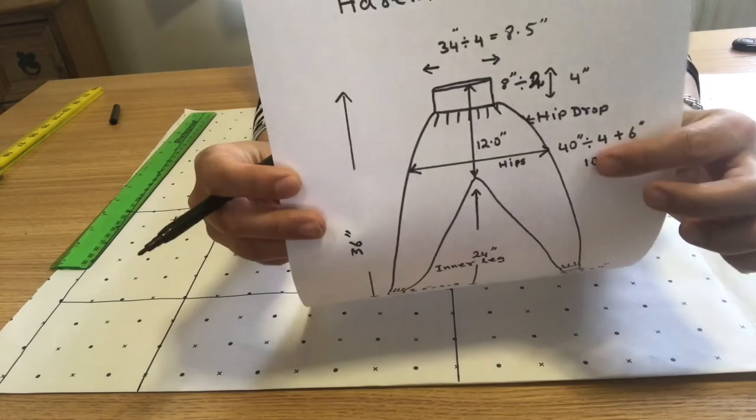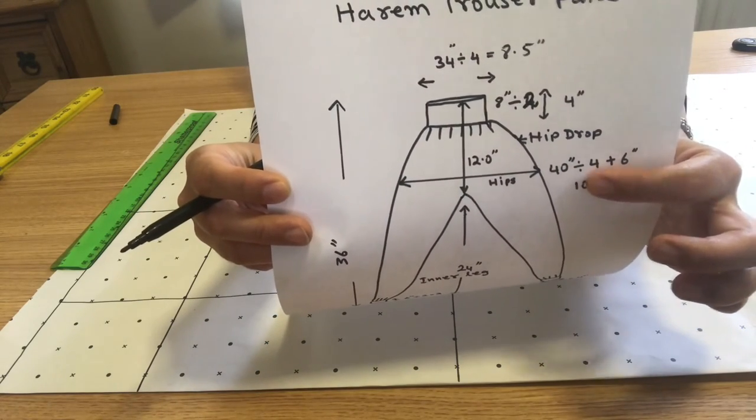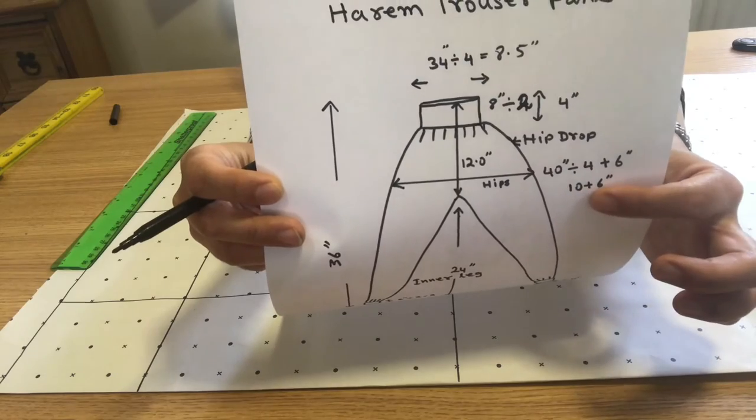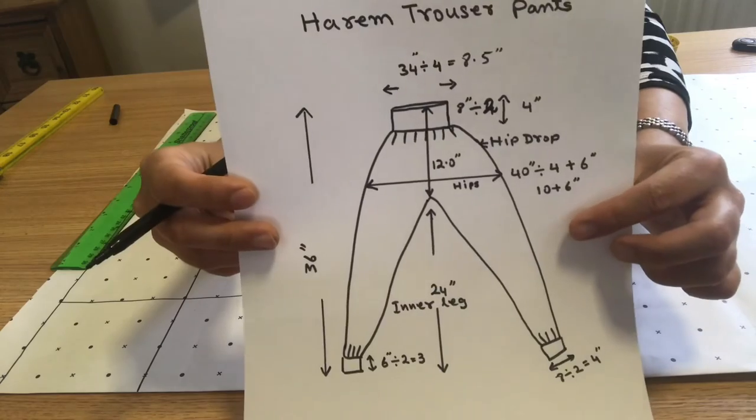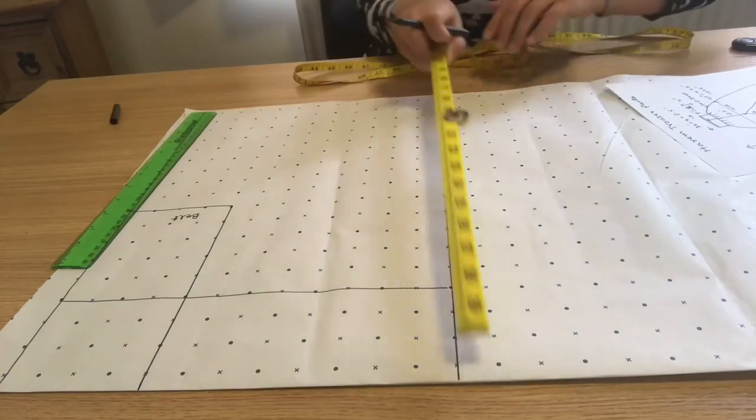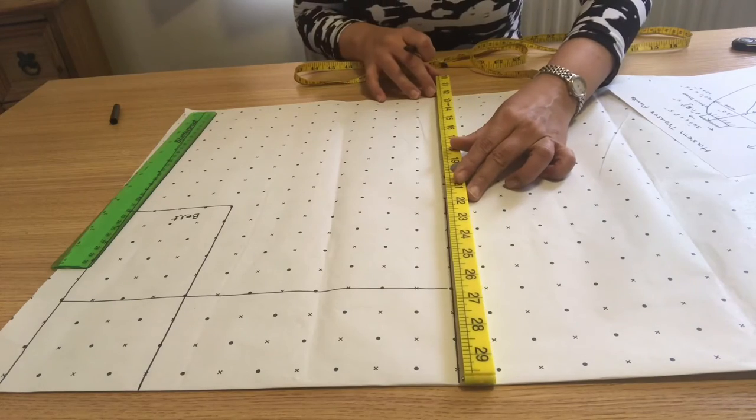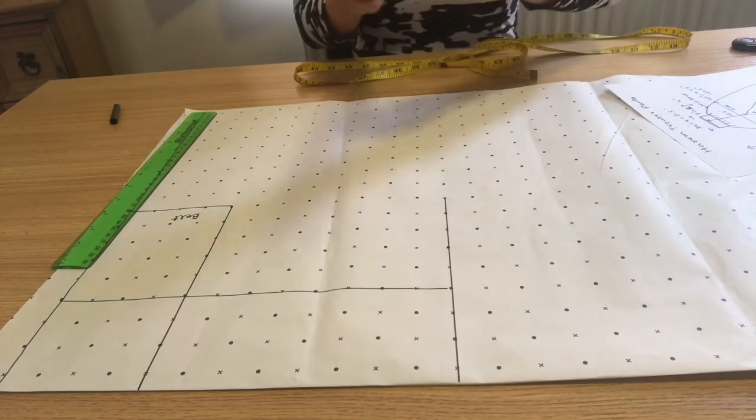And now hips—as I mentioned, hip measurement I have is 40 inches divided by 4. Then I have 10 plus 6—6 inches for gathering—and it makes 16 inches. I will draw a line up to 16 inches.